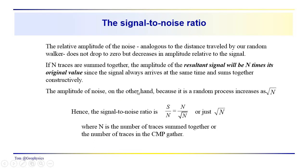The amplitude of the noise, on the other hand, is that random process we just talked about. It varies as the square root of N on average for many trials. So the signal-to-noise ratio, S over N, is just N over square root of N, or the square root of N squared over square root of N, or just square root of N. N in this case is the number of traces summed together in the common midpoint gather.